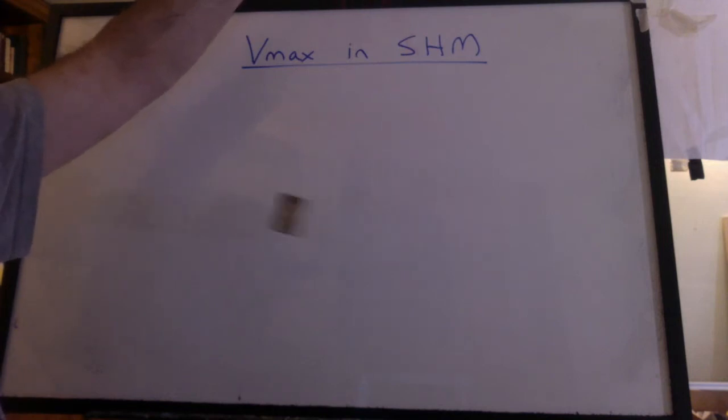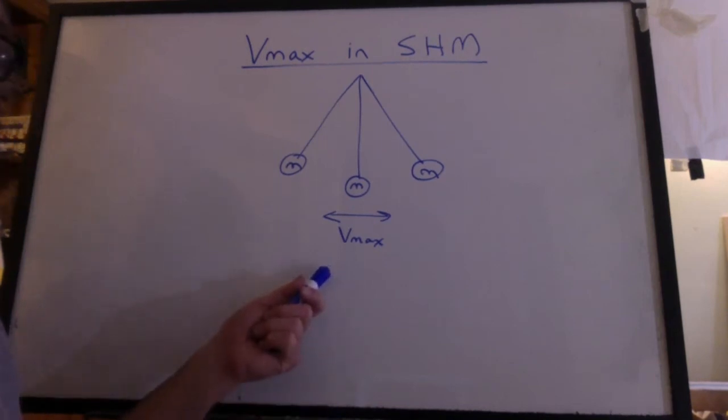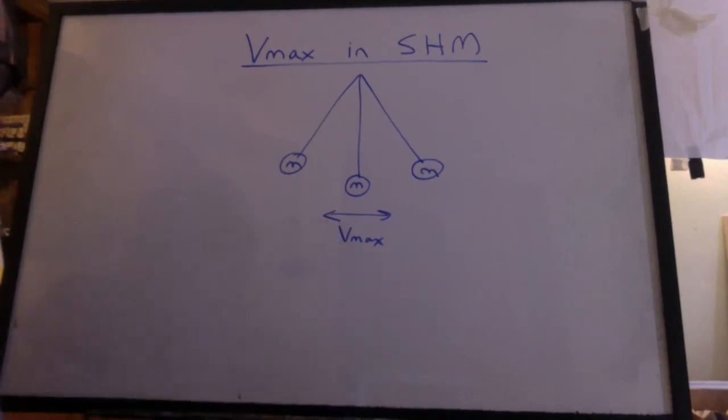Let's talk about finding the velocity maximum in simple harmonic motion. Just take a look at the pendulum and think, where is it going the fastest? I hope you could see that it was going the fastest at the equilibrium position. Of course, at the ends, it has to stop to turn around to go the other way.